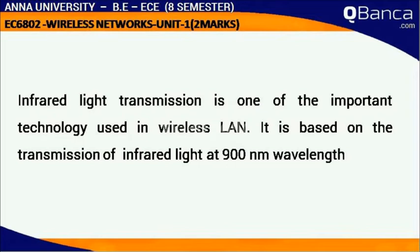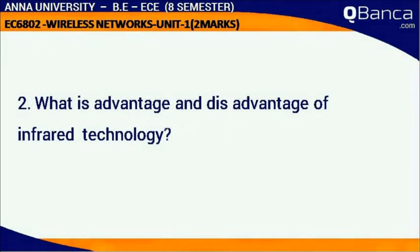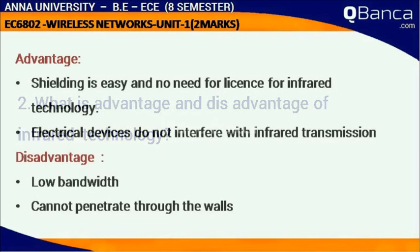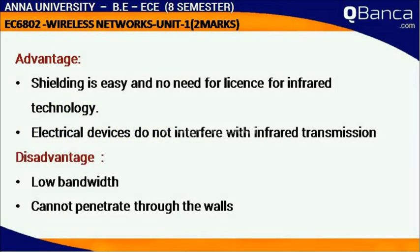It is based on the transmission of infrared light at 900 nanometer wavelength. What are the Advantages and Disadvantages of Infra-Red Technology? Advantage: Shielding is easy and no license is needed for infrared technology. Electrical devices do not interfere with infrared transmission.